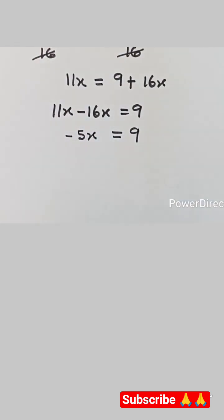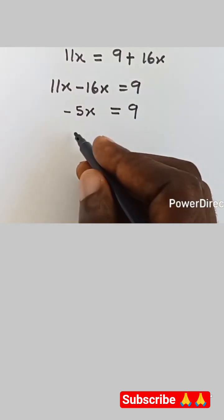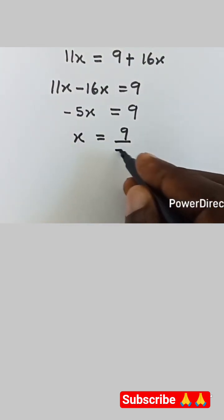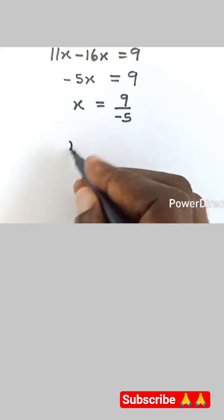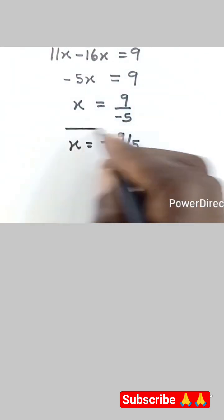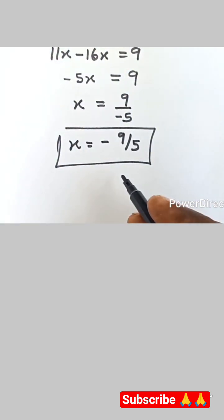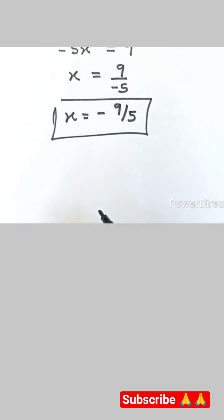11x minus 16x gives us minus 5x, so minus 5x equals 9. We then divide both sides by minus 5, so we have x equals 9 divided by minus 5, which is the same as x equals minus 9 over 5. This is the value of x: x equals minus 9 over 5.